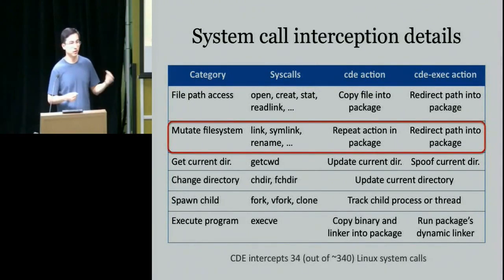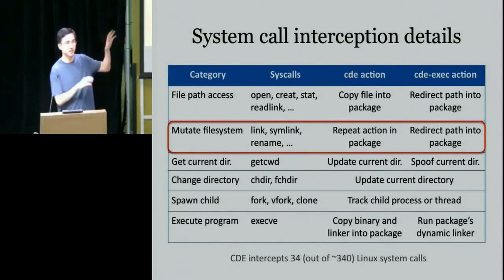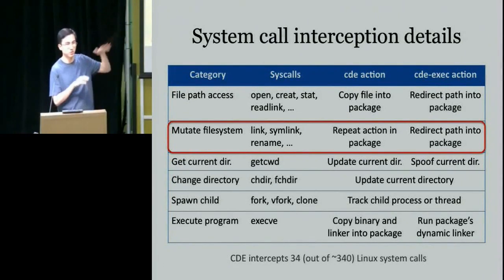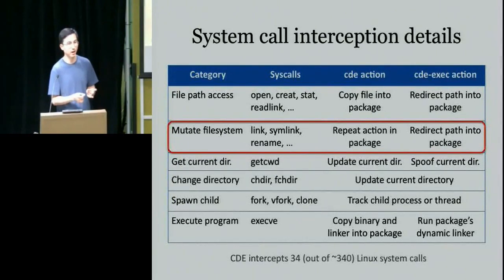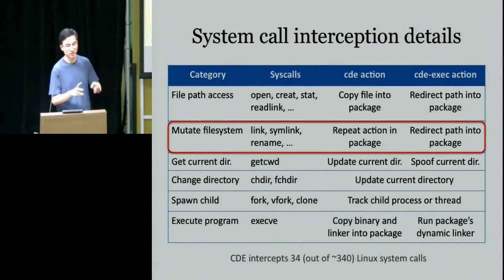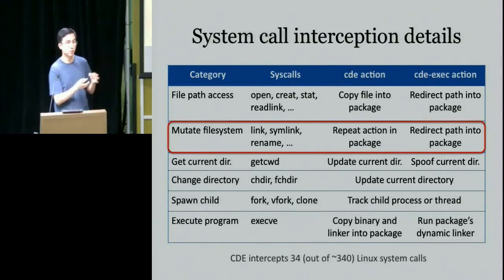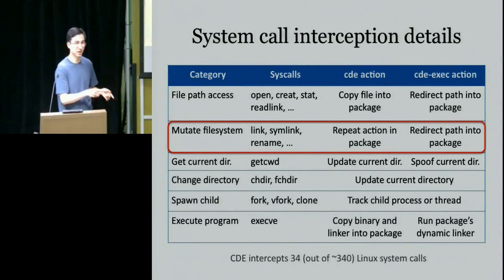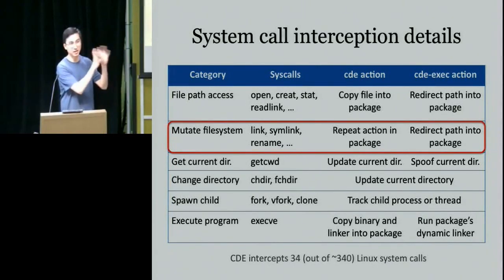If the program is mutating the file system — creating symlinks or renaming files — CDE repeats that same action in the package to keep them in sync. CDE-exec redirects the path so that file mutations happen inside the package rather than natively on the machine. This is important because you're probably moving files to machines where those files don't exist on the native file system, or where they may be the wrong versions. The package has to be totally self-contained.